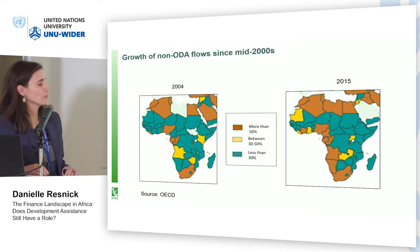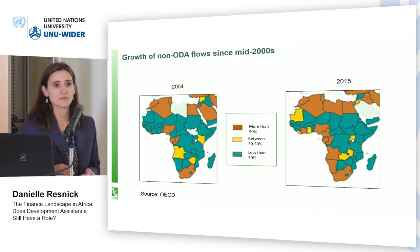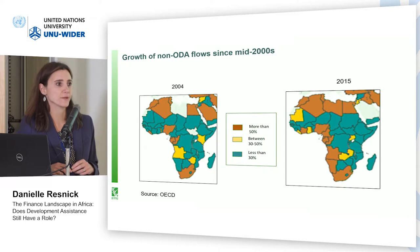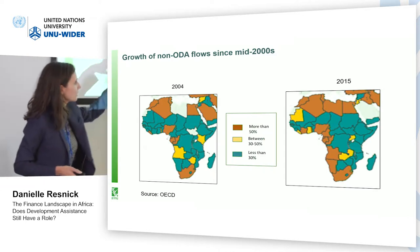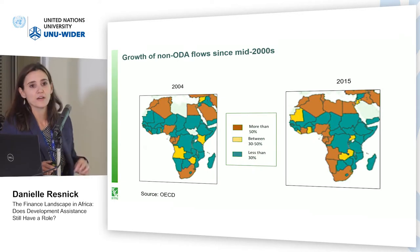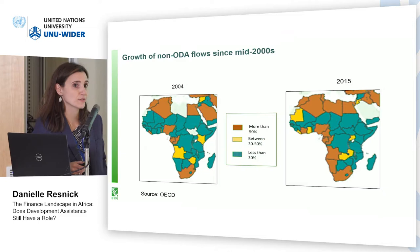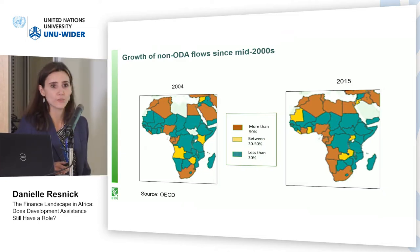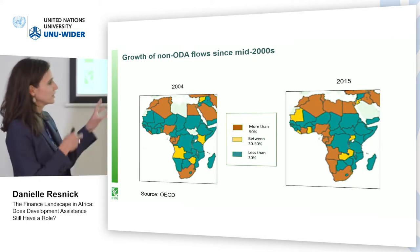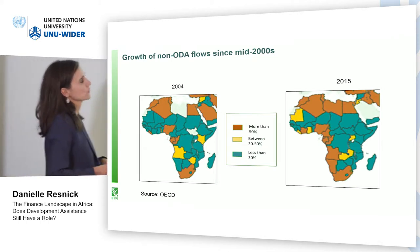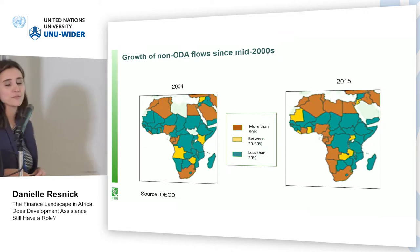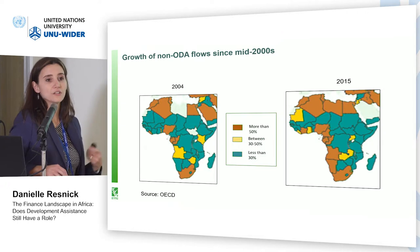Starting with a slightly blurry map, it's basically comparing disbursement flows of non-ODA disbursements since the mid-2000s to Africa. The turquoise area shows countries that were getting less than 30% of their disbursement flows from non-ODA sources — so they were more aid dependent, getting more of their flows from typical ODA disbursements. Between 2004 and 2015, we've seen a shift in this color distribution, with a lot more countries now getting at least 30 to 50% or more of their disbursement flows from non-ODA sources.